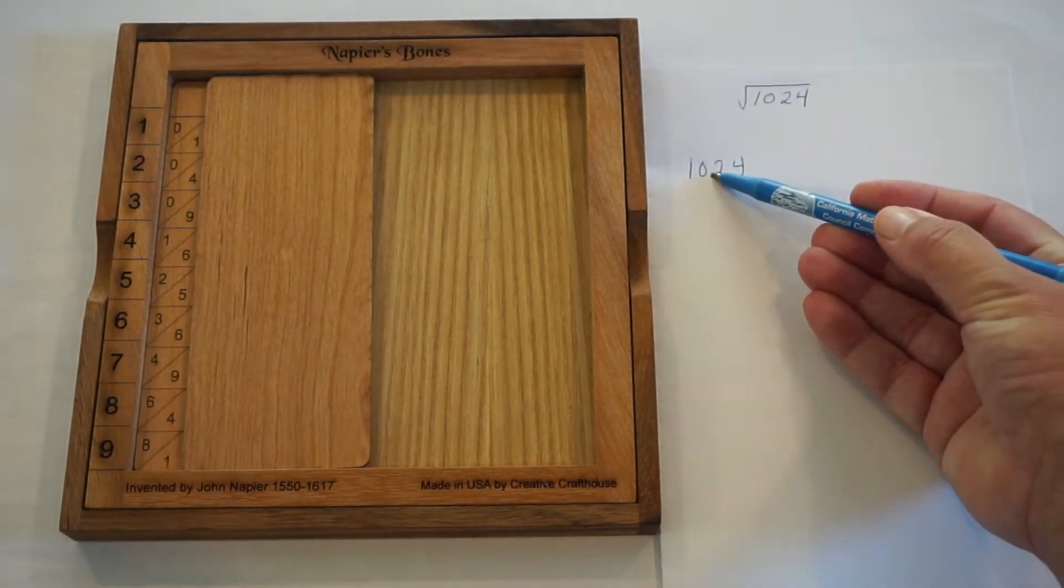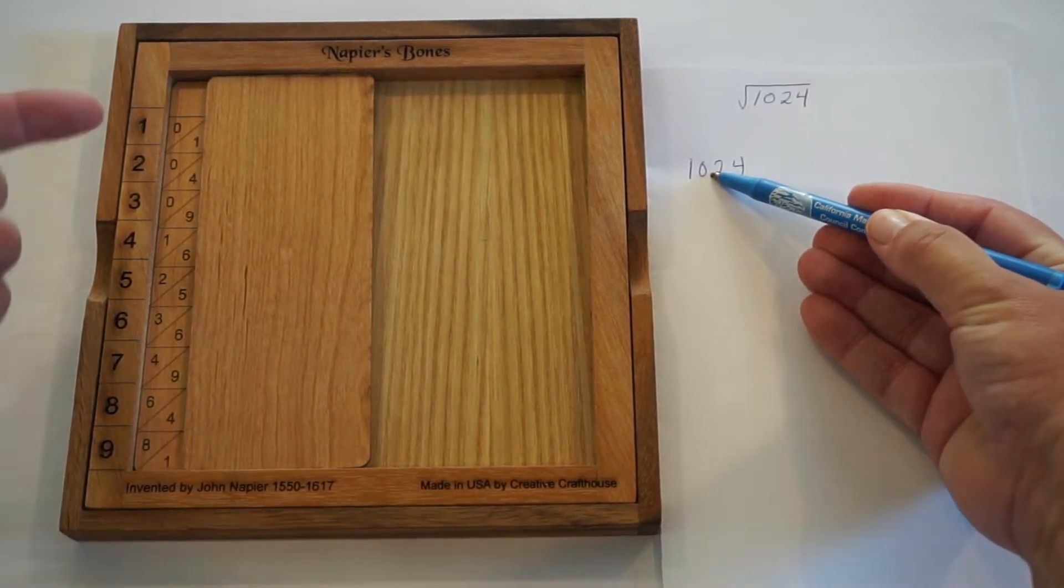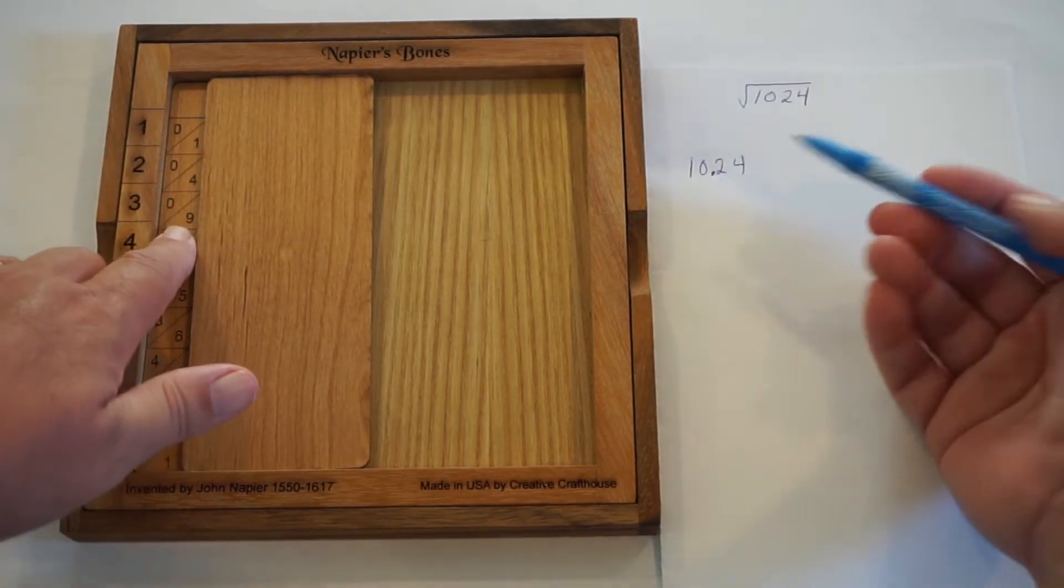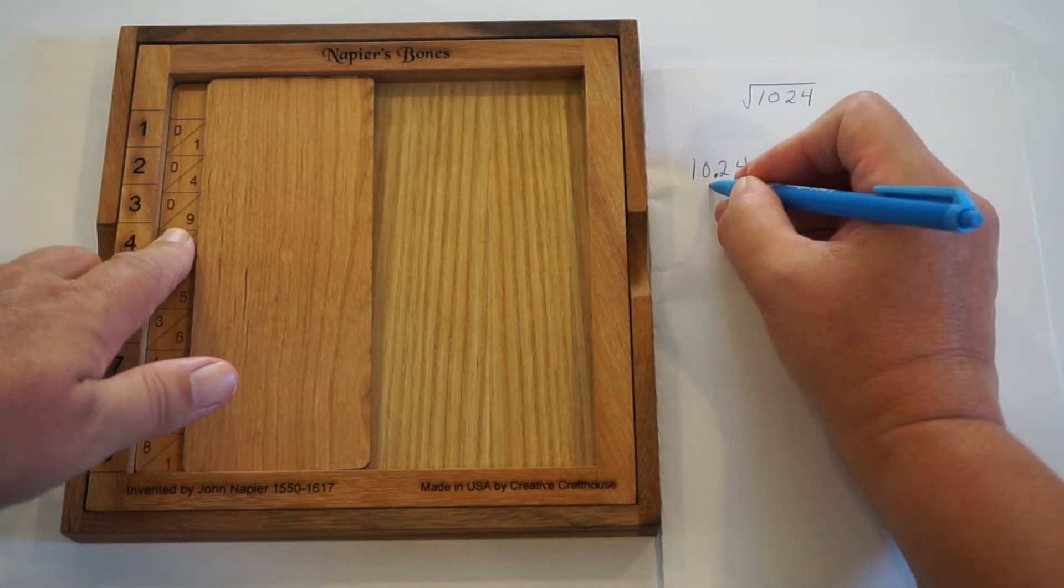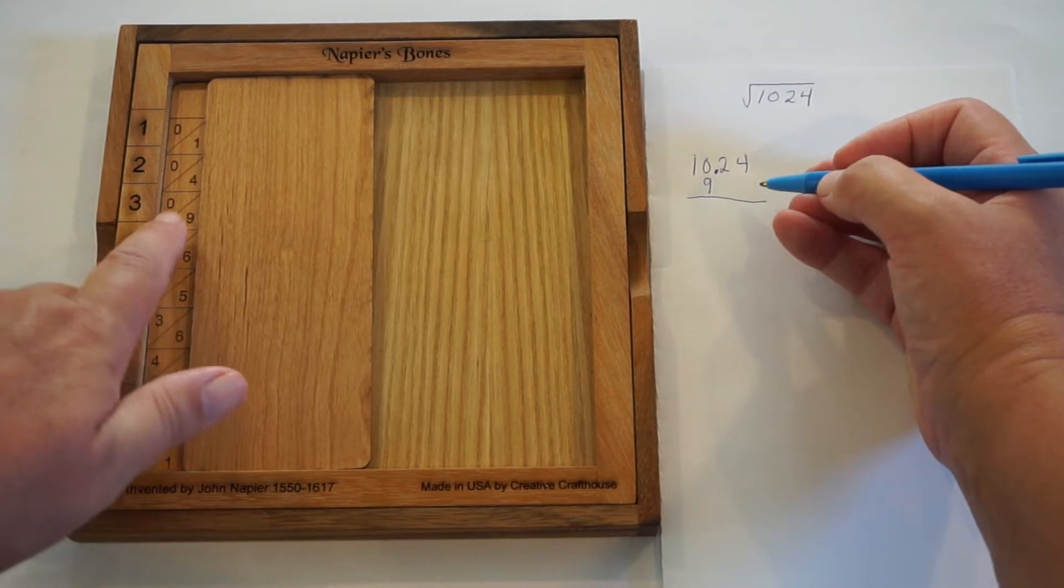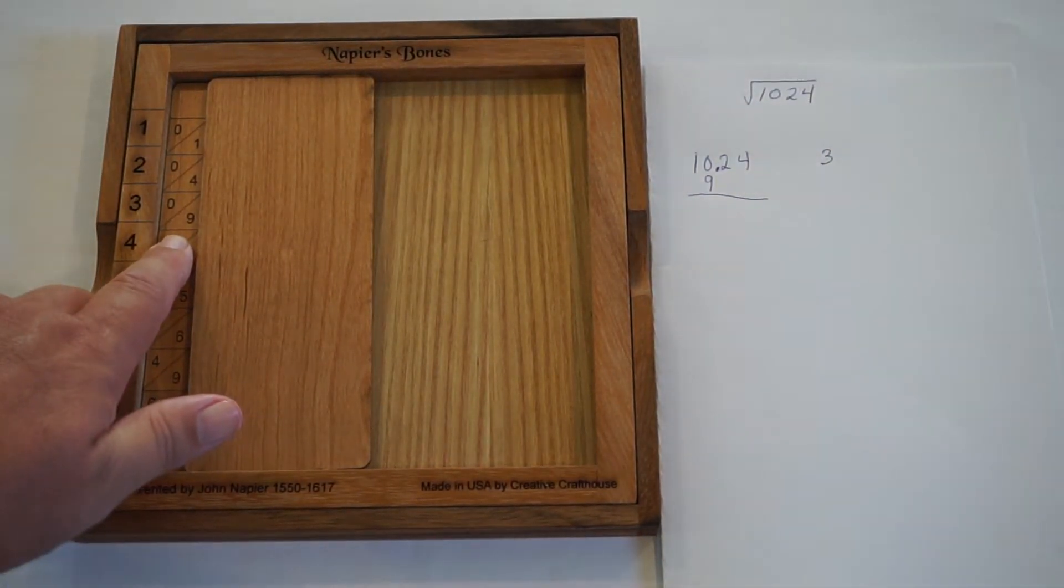What we're looking for is the closest perfect square root of 10 without going over. So I've got 1, 4, 9, and then we have a 16. So we're going to go with the 9, and that is 3 squared. 3 squared is 9. So the first part of our answer is 3.